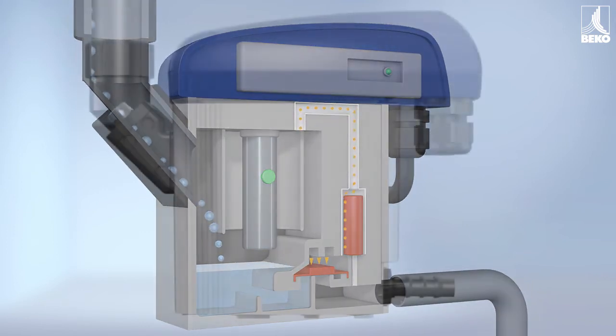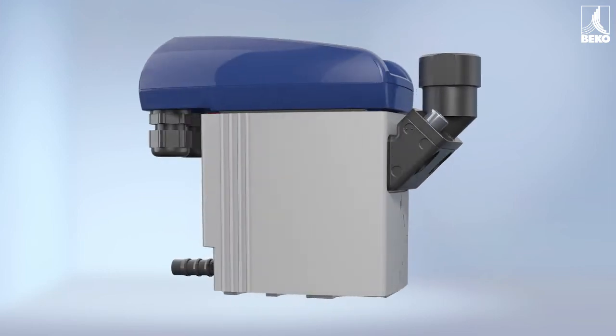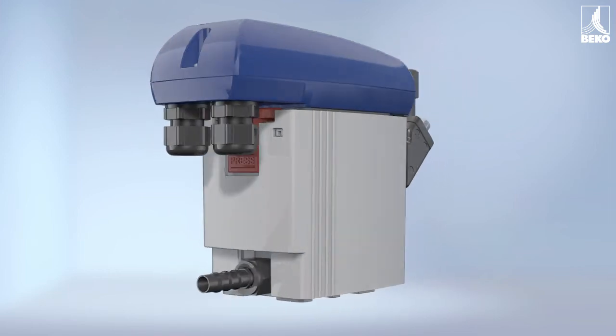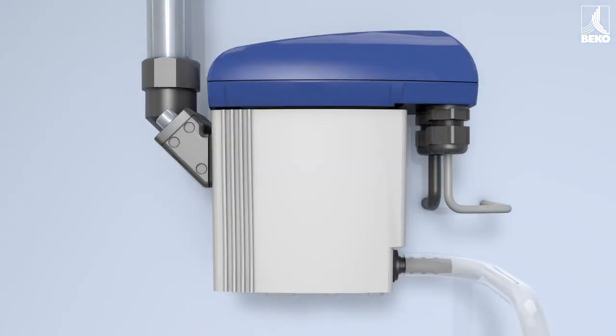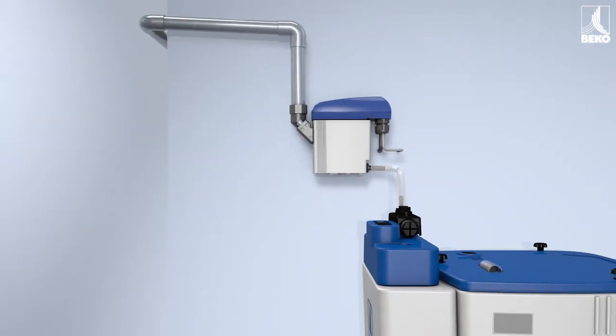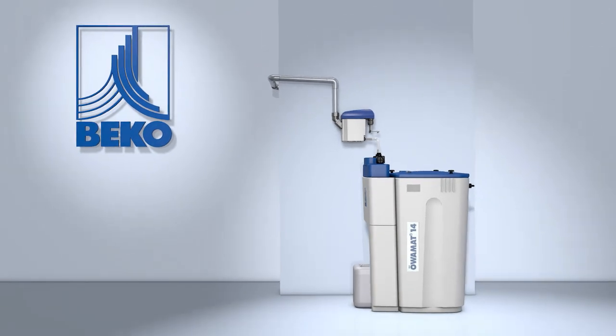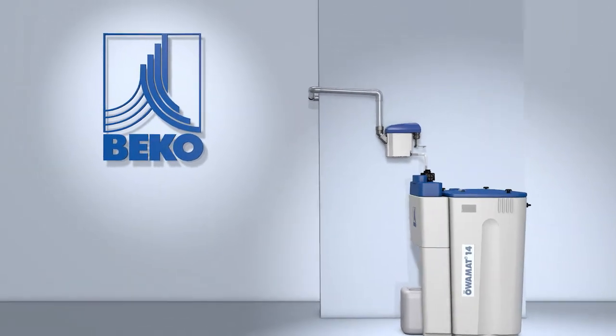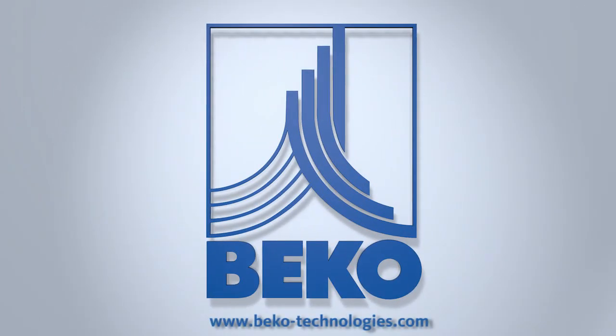In actual operation, the solenoid valve switches so quickly that no valuable compressed air escapes. The BEKOMAT drains the condensate into the OWAMAT oil water separator mounted downstream, adapted to the amount of condensate and without compressed air loss.